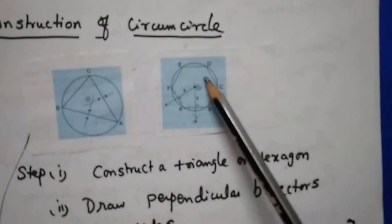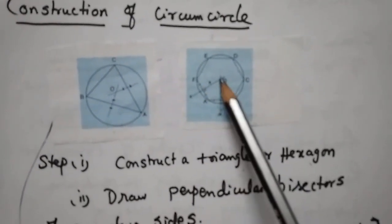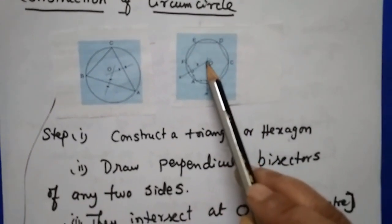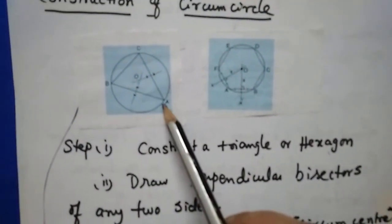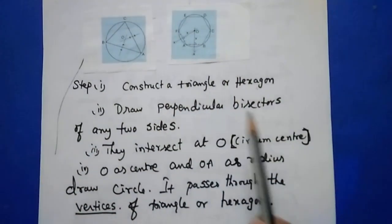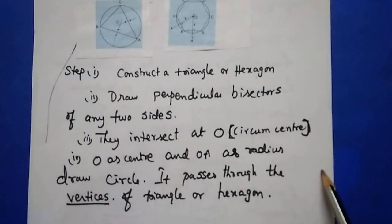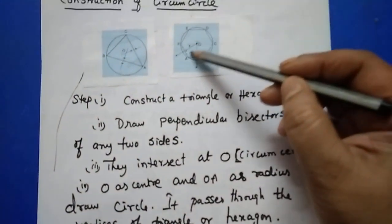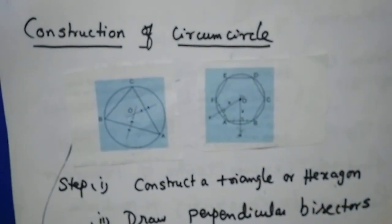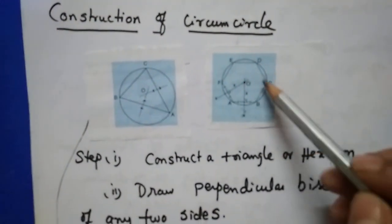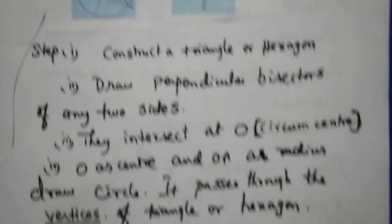The point O is called the circumcenter. With O as center and OA as radius, draw a circle. It passes through all the vertices of the triangle or hexagon — this is called the circumcircle. Measure the radius OA. The circle is outside the triangle or hexagon — it is circumscribed.